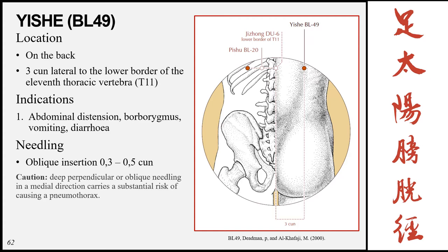The next point is Yishe, Bladder 49, on the lower to middle back three cun lateral to the lower border of the eleventh thoracic vertebra. This is level with Pishu, Bladder 20, which is 1.5 cun lateral to T11. Indications include abdominal distension, borborygmus, vomiting, and diarrhea. Needling is oblique insertion 0.3 to 0.5 cun; caution against deep perpendicular or oblique medial needling as both carry a risk of pneumothorax.